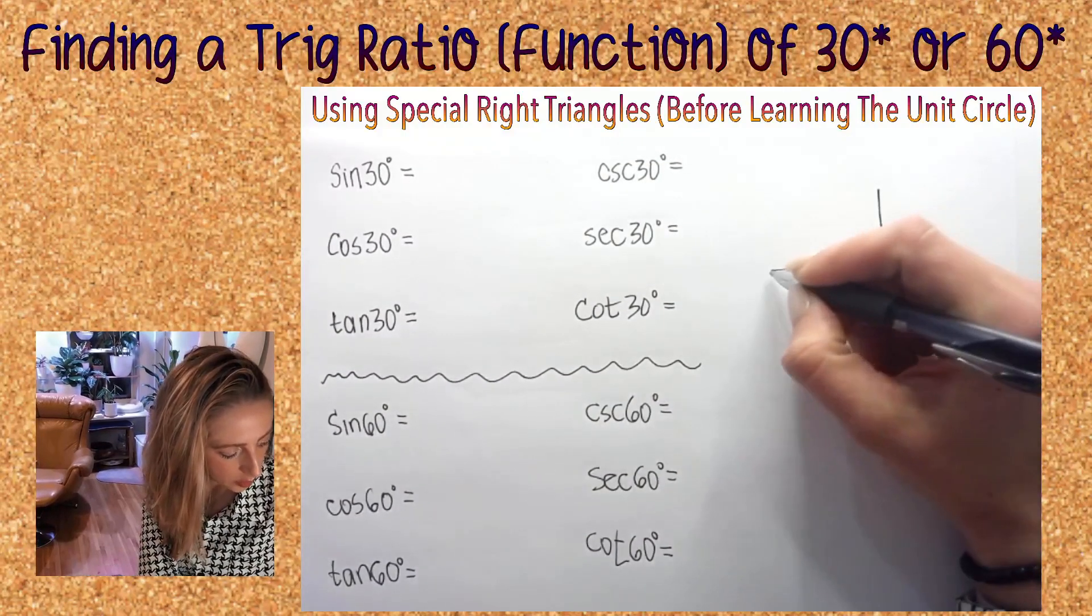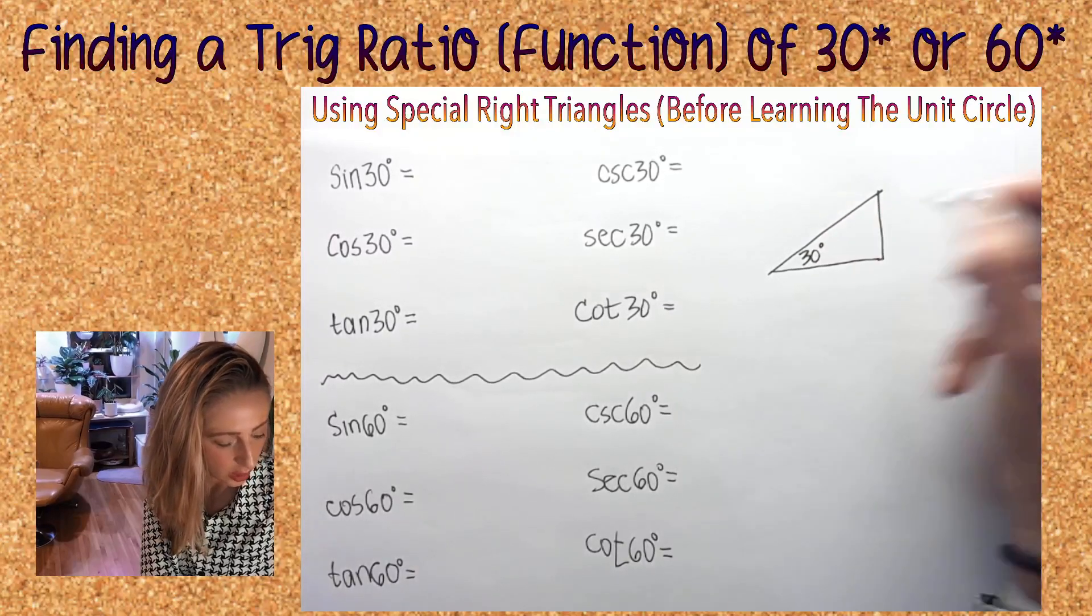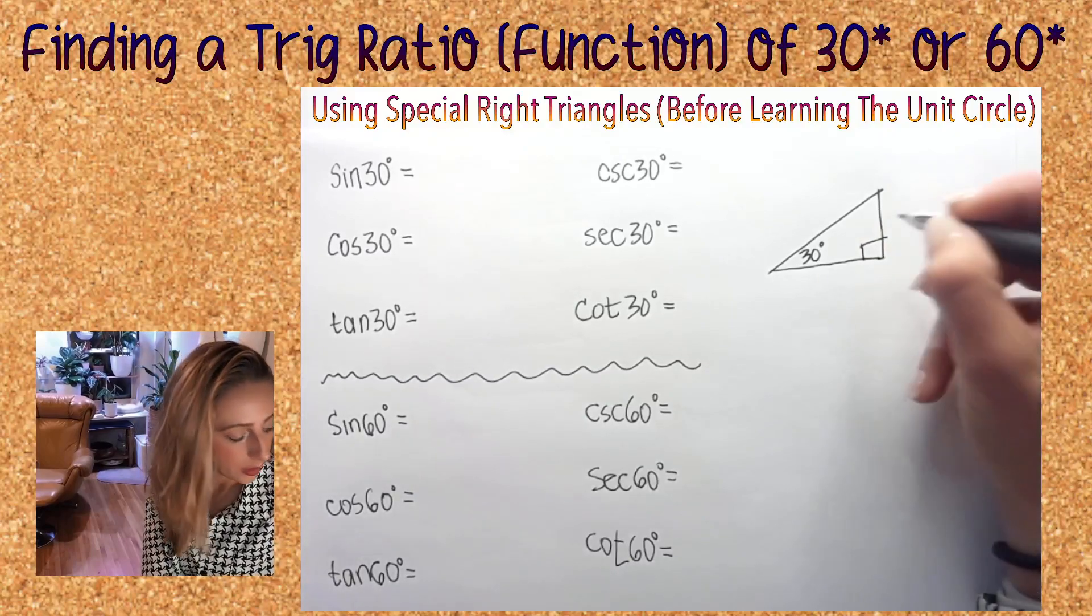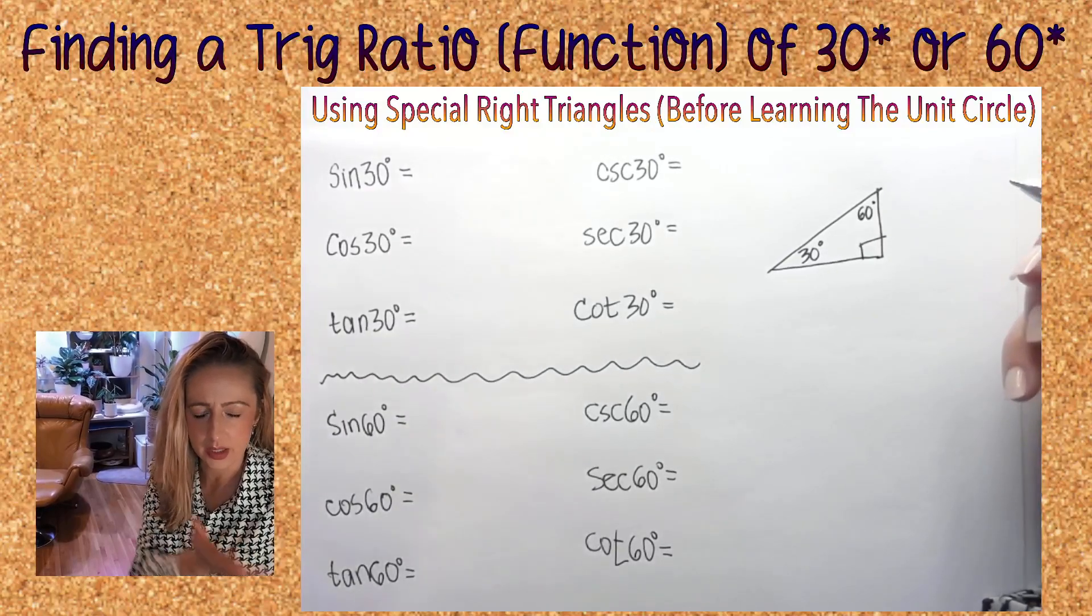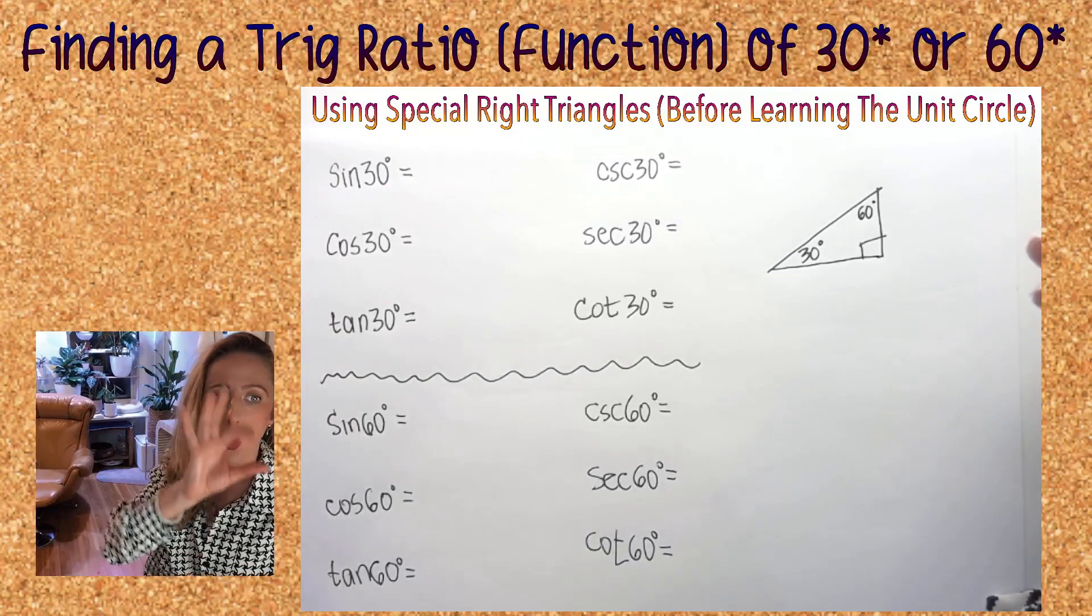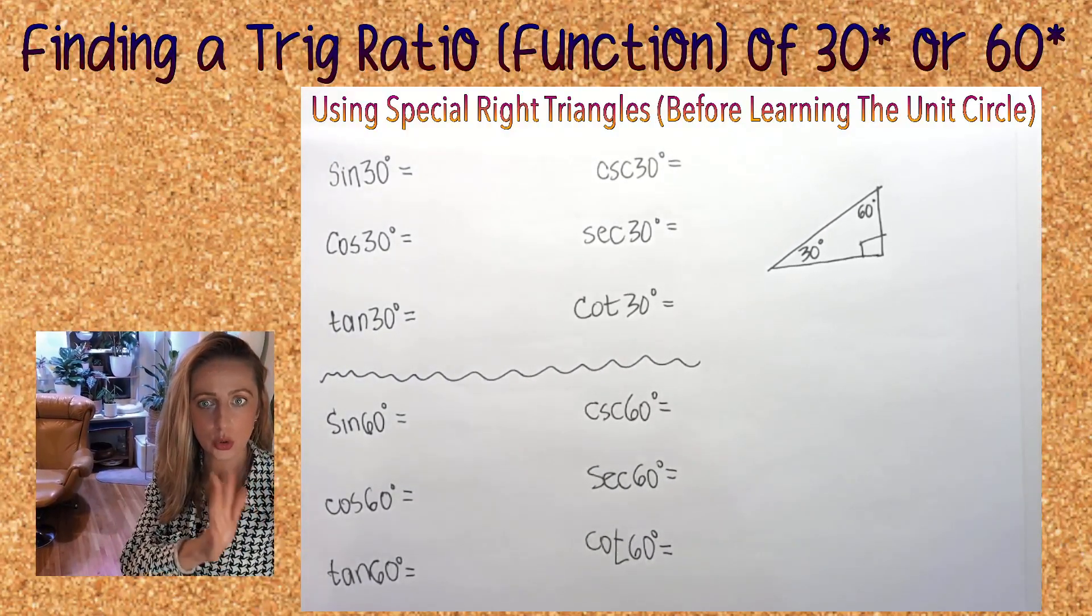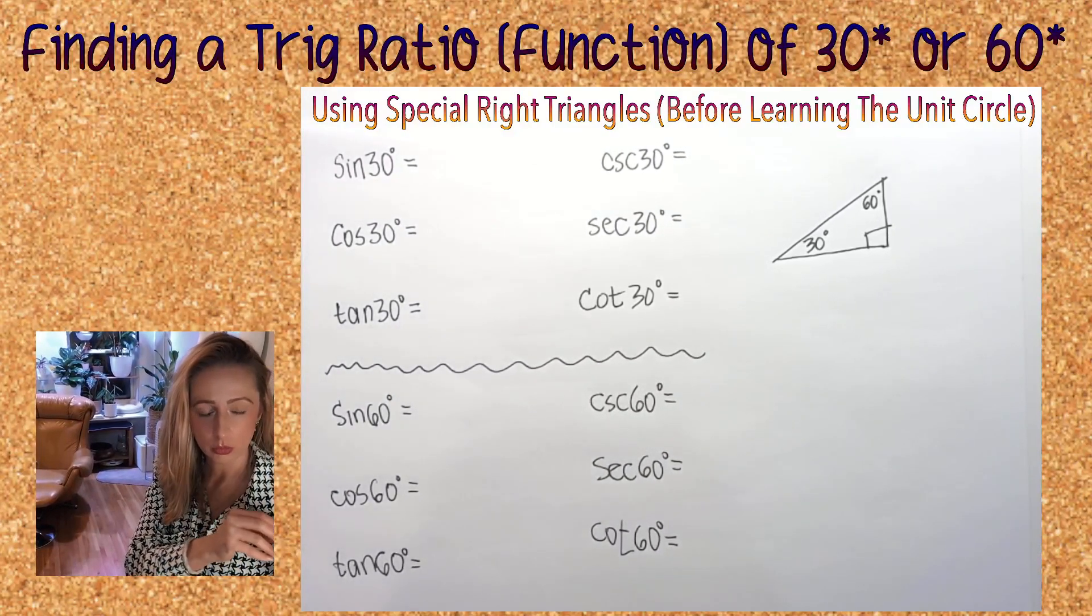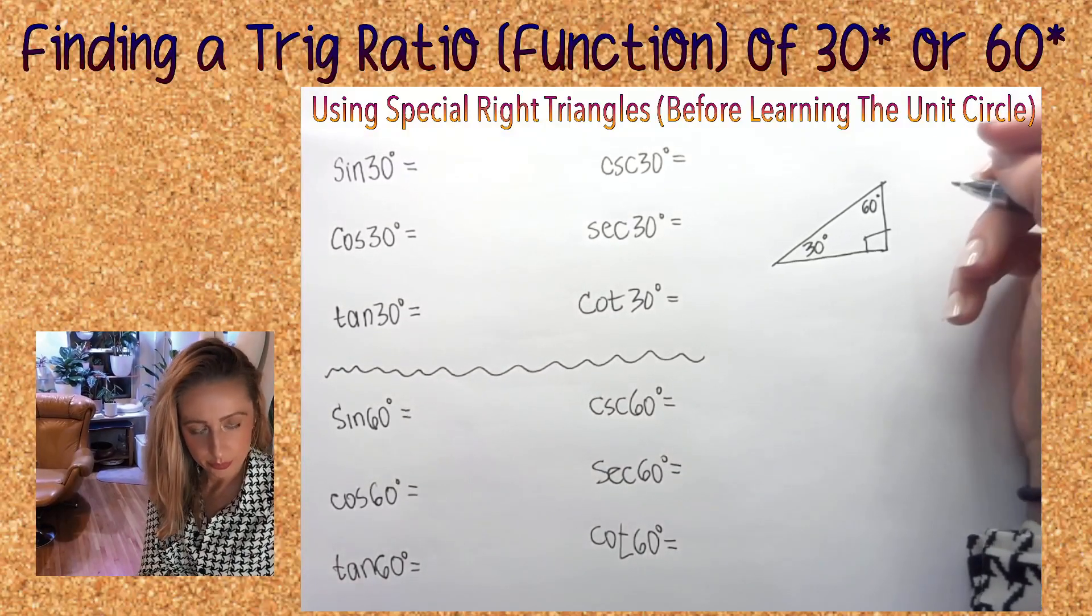If you got 30 degrees, 60 degrees, and your 90 degree angle indicating a right angle, what are the three little expressions that we use to represent each of the sides of this special right triangle? Go ahead, write it down, I'm waiting.